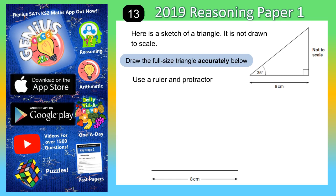Welcome Sats Geniuses to question number 13. Here is a sketch of a triangle. It is not drawn to scale, and we've got to draw the full-size triangle accurately below. And it says, use a ruler and protractor.